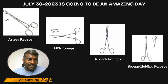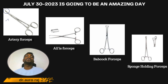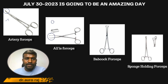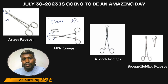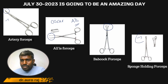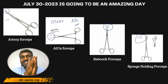This is artery forceps — look at the edges, slightly bent upward — used for controlling bleeding by clamping blood vessels. The next is Allis forceps, invented by Oscar Allis, used for holding heavy tissues. Next is Babcock forceps, used for holding delicate structures. And this is sponge-holding forceps.